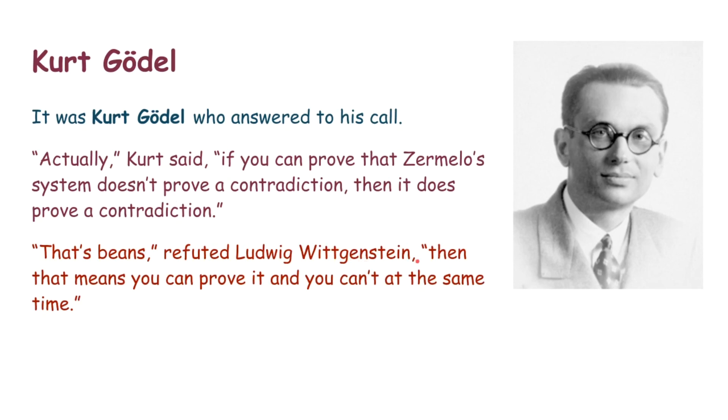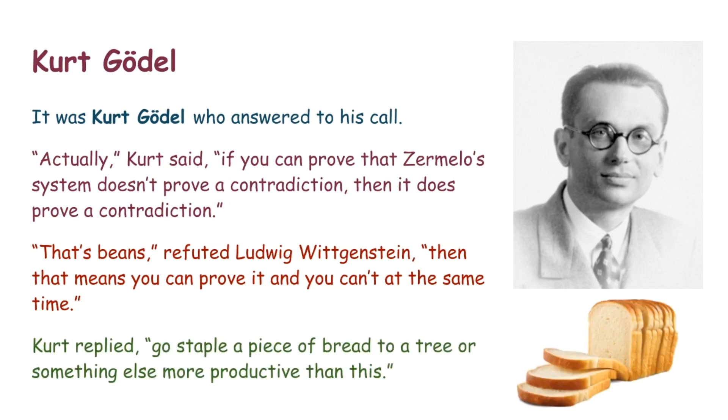So Ludwig Wittgenstein, he was not a very big fan of this idea. He was like, that's beans, that means you can prove it and you can't at the same time. And translated into the modern age, Kurt basically replied something along the lines of, go staple a piece of bread to a tree or something else more productive than this. Because it was not very productive what he was doing. He was just refuting a known fact that he proved as a paradox and then sort of just saying it's false, which isn't true.